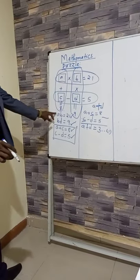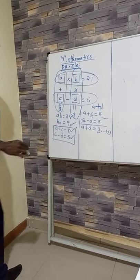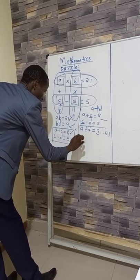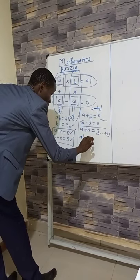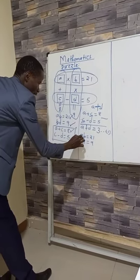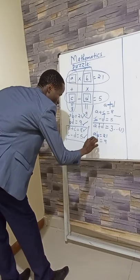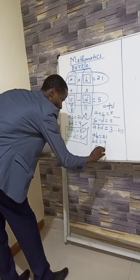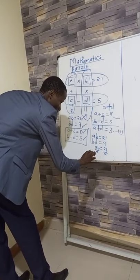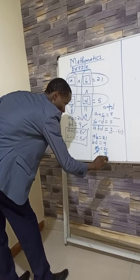Now we have to manipulate the two equations: A times B is equal to 21 and B times D is equal to 9. There is B in both. We can make B the subject. From the first equation, A times B equals 21, so B is equal to 21 over A.